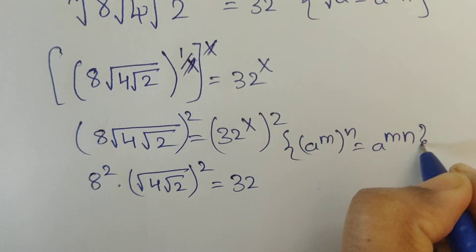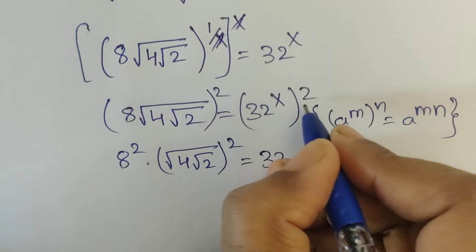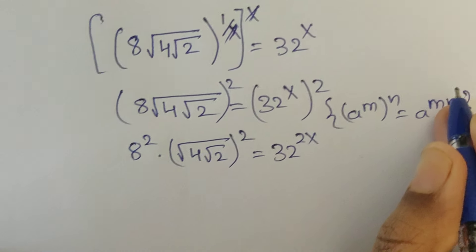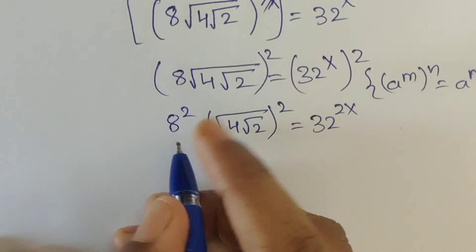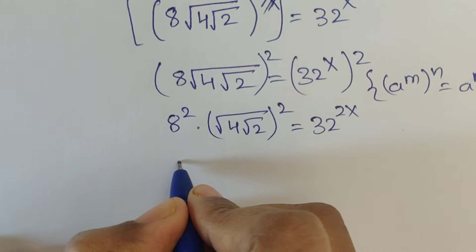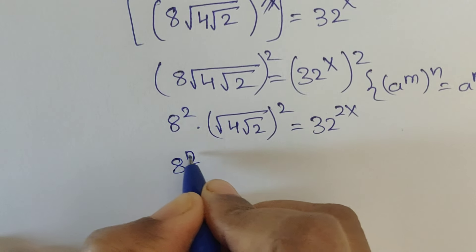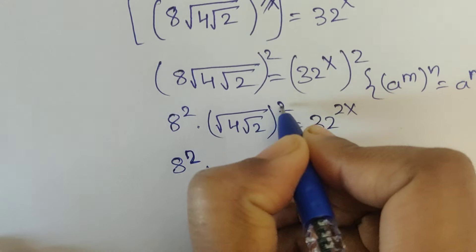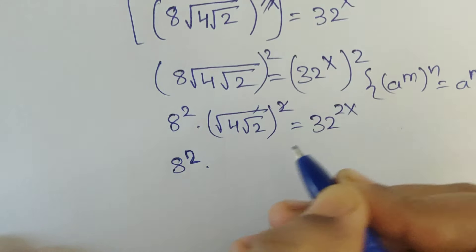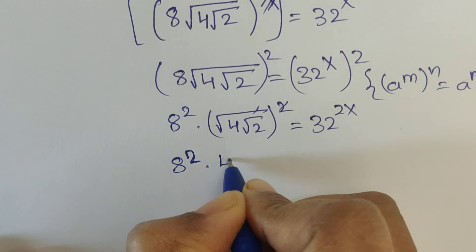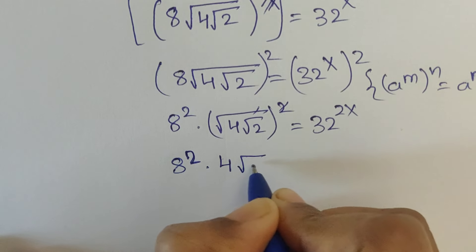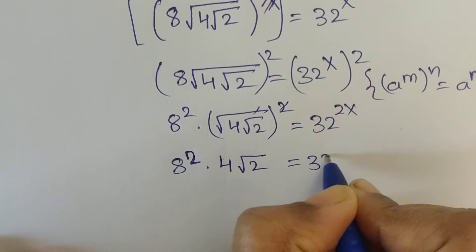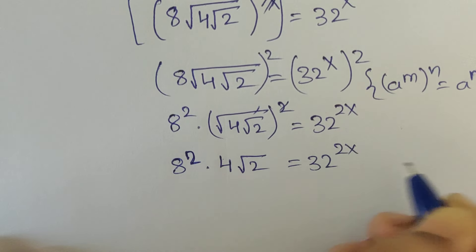Using this formula, 2 times x equals 2x. So 8 to the power of 2x — and the square root squared get cancelled — gives us 4 square root of 2 equal to 32 to the power of 2x.